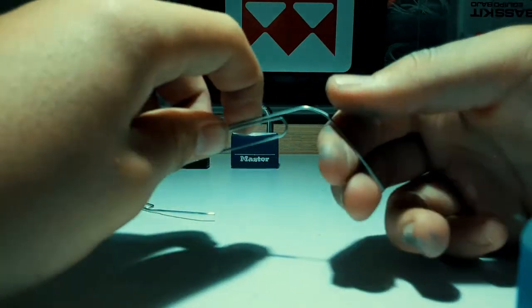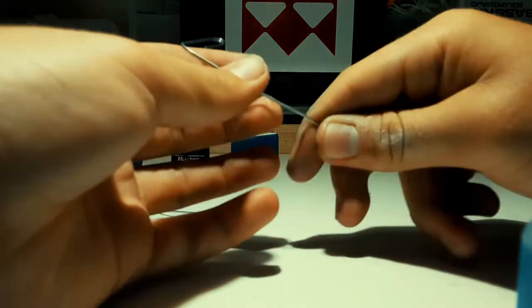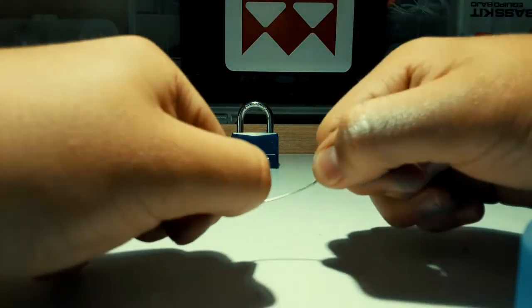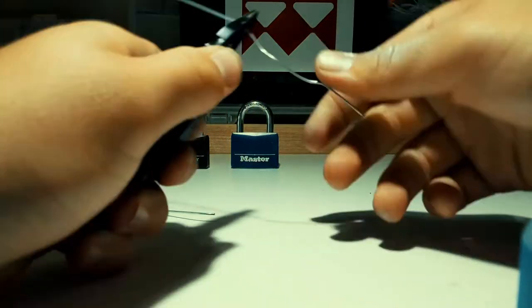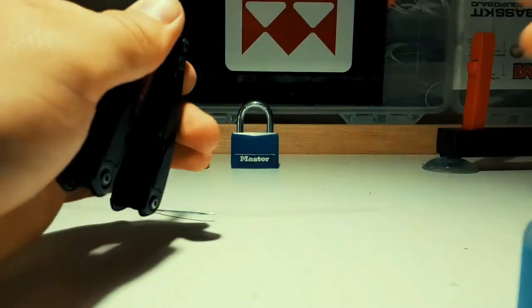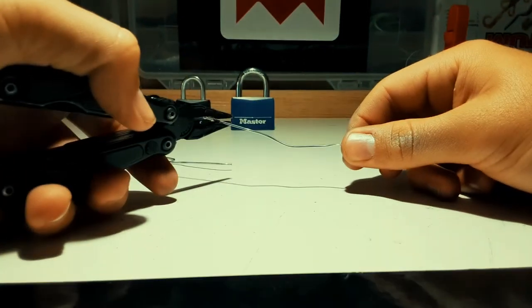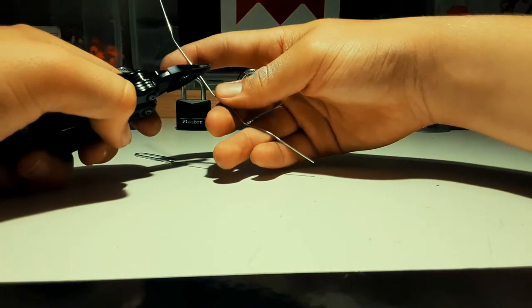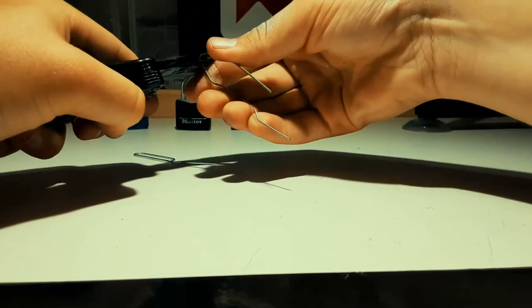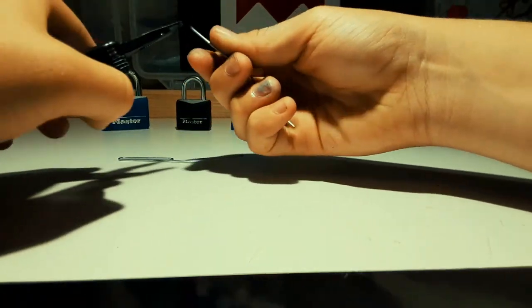You are going to open up your paper clip all the way, like every bit of it, just like that. Straighten it out just like so. Then you're going to grab it in the middle with a pair of pliers. It doesn't have to be perfectly in the middle, just halfway. You're then going to bend the paper clip in half, both sides together like that. Does not have to be anything fancy.